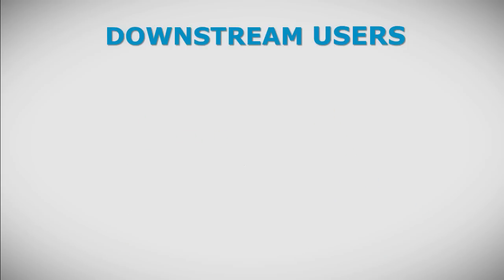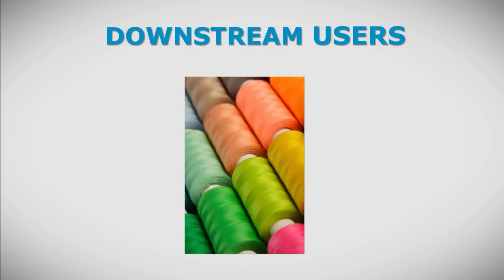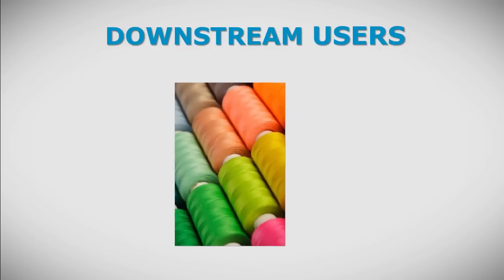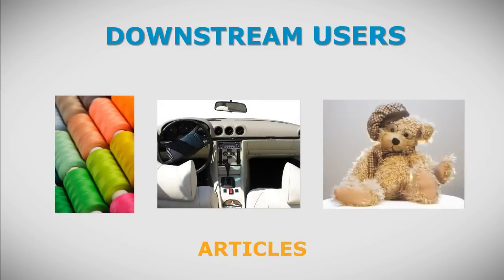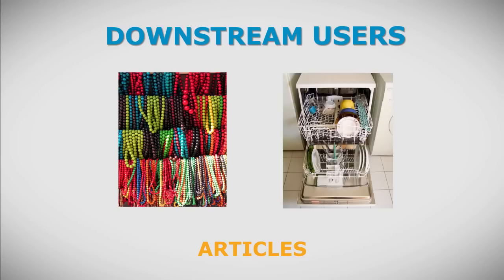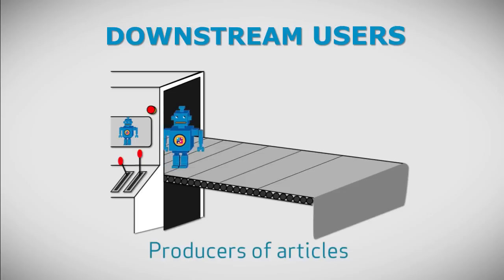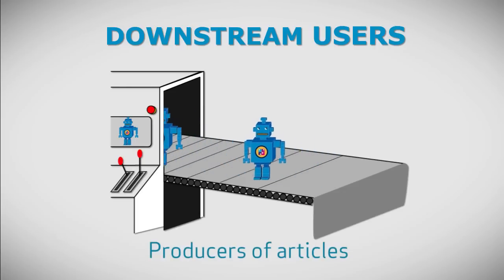Many manufacturers incorporate substances or mixtures into articles, such as textiles, vehicles, toys, jewellery, and household appliances. These downstream users are called producers of articles.